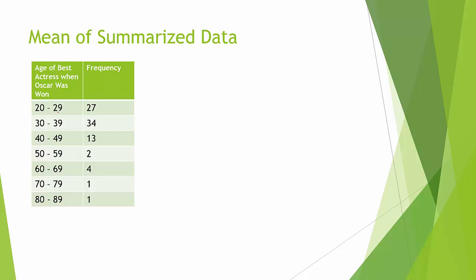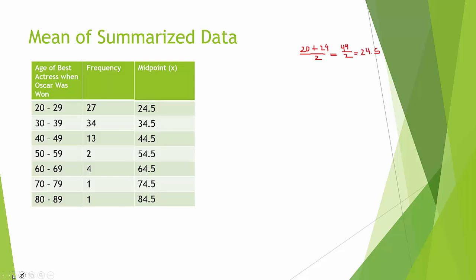The first step is to calculate the midpoint for all of these categories. To calculate the midpoint, I take the lowest data value — 20 — add it to the highest data value — 29 — and divide by 2. On my calculator, 49 divided by 2 gives a midpoint of 24.5. Since my classes go up by tens, I can calculate all the midpoints easily. The midpoints are referred to as x because we're going to use them as our actual pieces of data, since we don't know the original pieces of data.